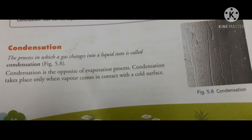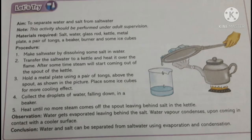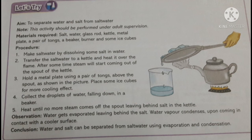Here, water vapor condenses on cold surfaces in the form of water drops. Activity: aim is to separate water and salt from salt water. Materials required: salt, water, glass rod, a kettle, a metal plate, a pair of tongs, a beaker, a burner, and some ice cubes. Procedure: make salt water and transfer it to a kettle, then heat it over a flame. After some time, steam will start coming out of the spout. Hold a metal plate using a pair of tongs above the spout, and place ice cubes over the plate for a cooling effect. Collect the droplets of water falling down into a beaker. Heat until no more steam comes out of the spout, leaving behind the salt in the kettle.